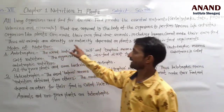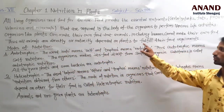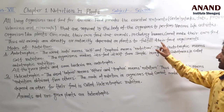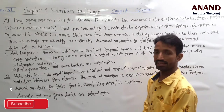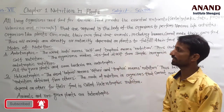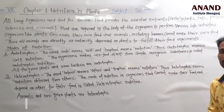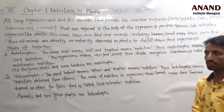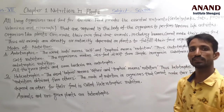All animals are directly and indirectly dependent on plants to fulfill their food requirement. Animals have to depend on plants, either directly or indirectly, to meet their food needs.